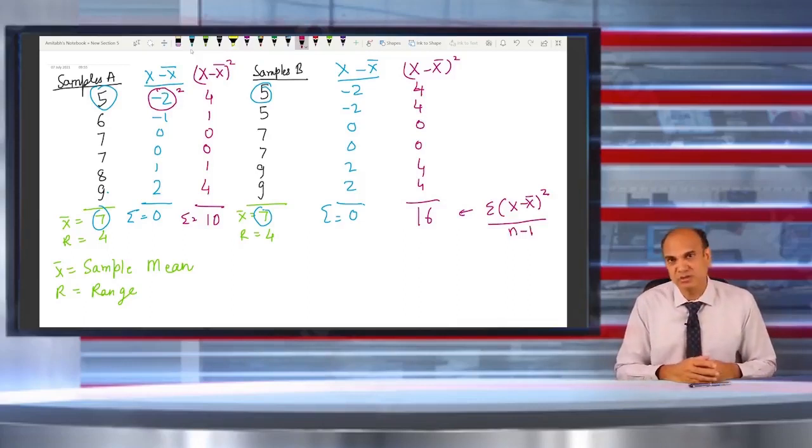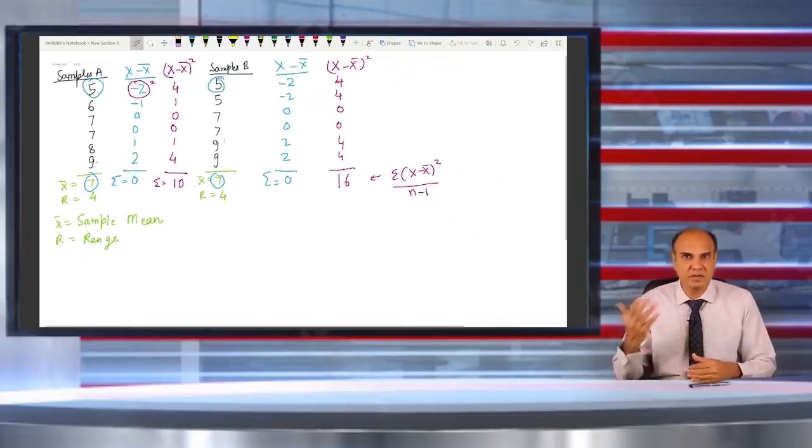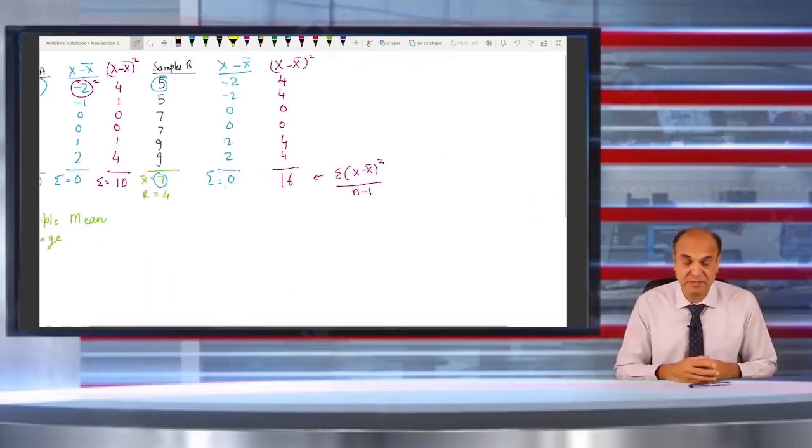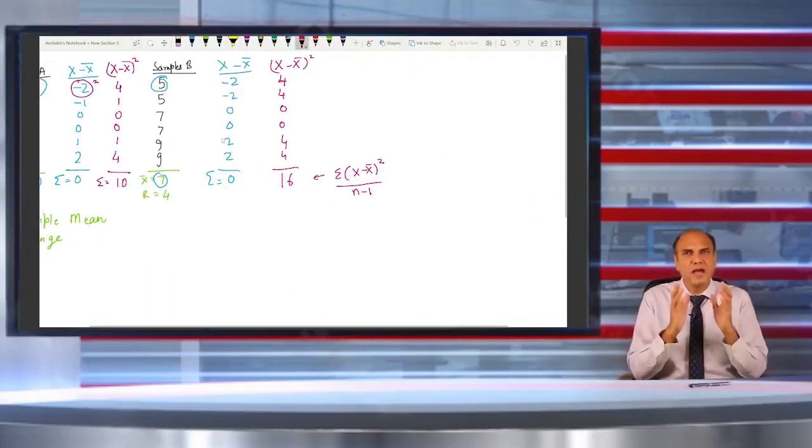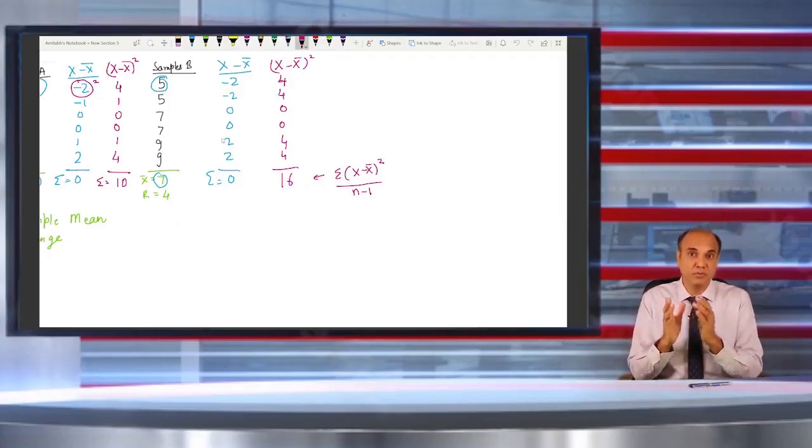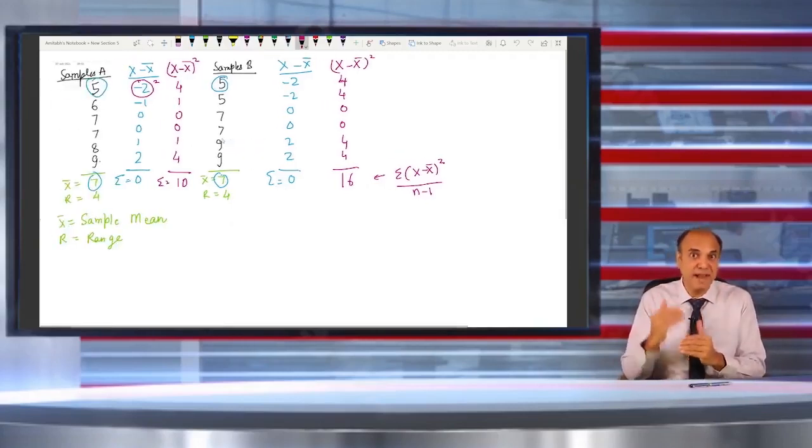This is something to do with the degrees of freedom, which I may not be explaining in this session. I have talked about that in a separate session. But n minus 1 you will be using as a denominator when you are dividing the sum of squares of a sample to calculate the variance in the data.